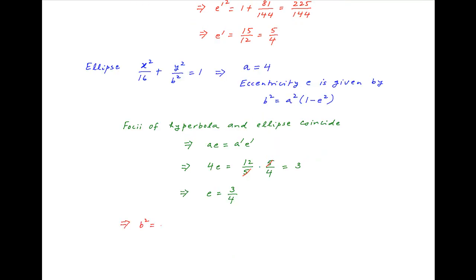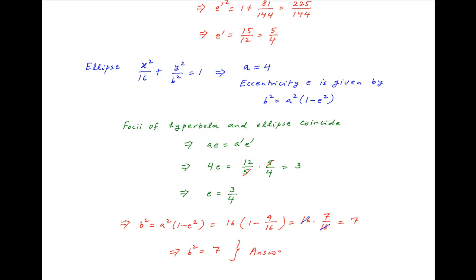Using this, the value of B² = A²(1 − E²) = 16 × (1 − 9/16) = 16 × (7/16), which simplifies to 7. Therefore, to conclude, the value of B² is equal to 7, which is the required answer.